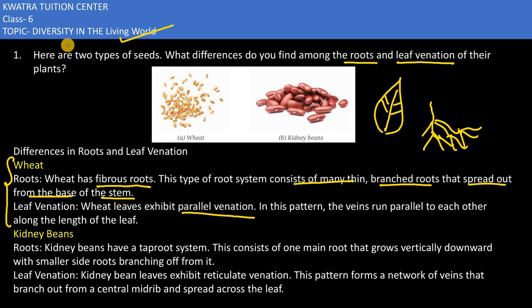If we talk about kidney beans, which is Rajma, which roots are there? Tap roots. It would have only one main root that grows vertically downward, with smaller side roots branching off from it.